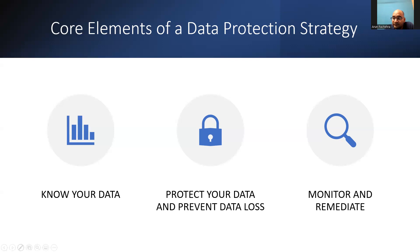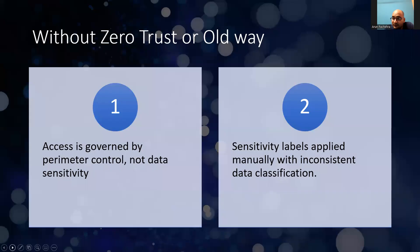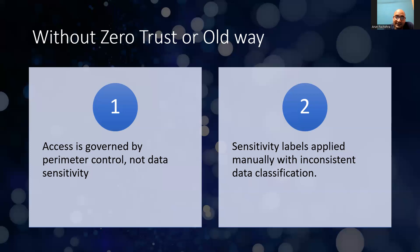But if we look at how things were happening before Zero Trust — many organizations were doing things differently, which were not appropriate, and that's the reason the Zero Trust framework came into the picture. Access was governed by perimeter control, not by data sensitivity. Inside the perimeter, everything was good to go — which is not a good approach. Sensitivity labels were applied manually, which means they were prone to error and resulted in inconsistent data classification.